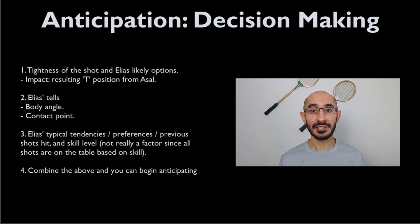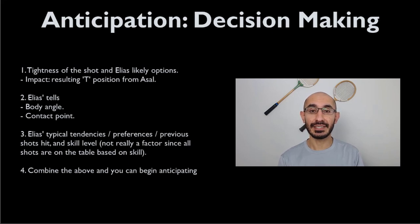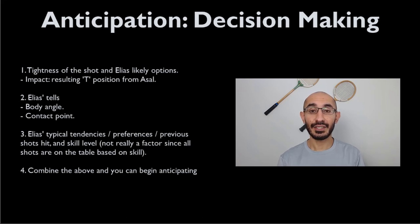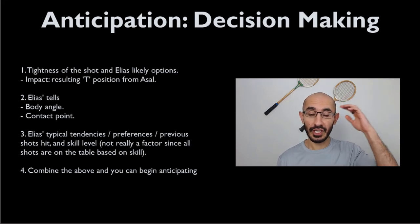When it comes to anticipation, we're really talking about effective decision-making. The top players in the world have so much experience in seeing their opponents in certain positions. They have such a deep understanding of what options are available from certain positions. They're not consciously thinking about all of these nuances in the middle of a match — it's through practice and conscious development in training that they've created these chunks in their mind.